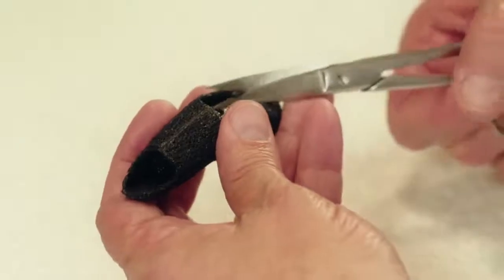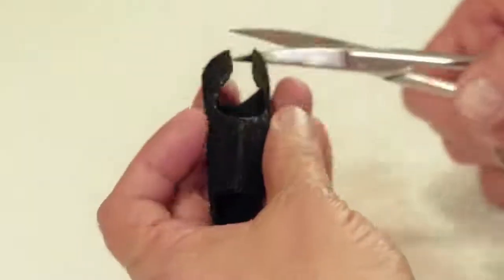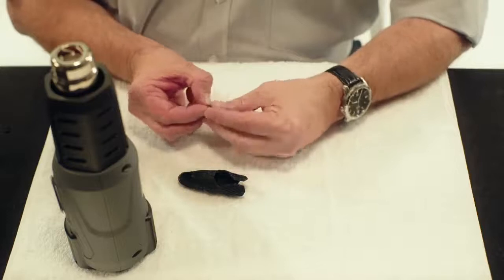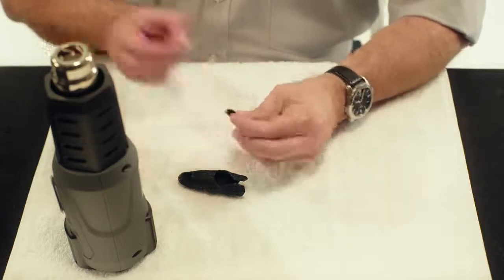Always be sure to round all the edges. Attach a small piece of Velcro adhesive-backed hook on the dorsal side.